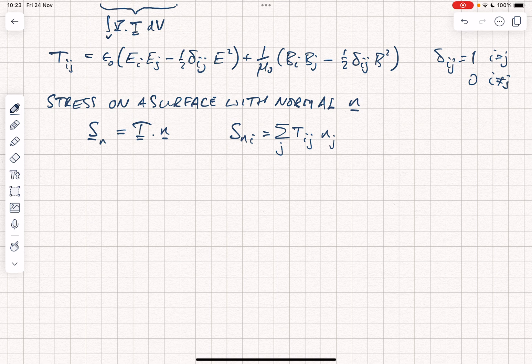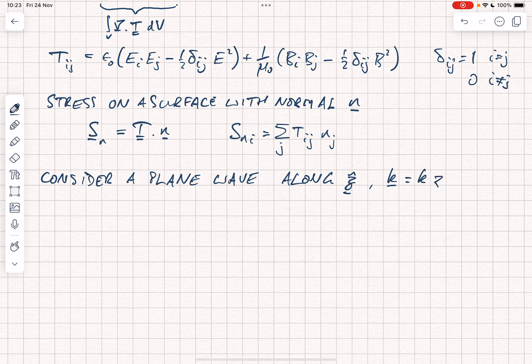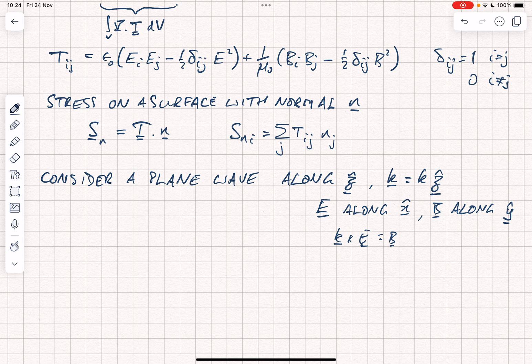So let's just think about a plane wave and think about what the stress that would give. So let's consider a plane wave travelling along Z. You could write K is equal to K in the Z direction. We'll put E along the X direction, which means that B is along Y, which gives us a right-handed set because K cross E is equal to B and Z cross X is equal to Y.